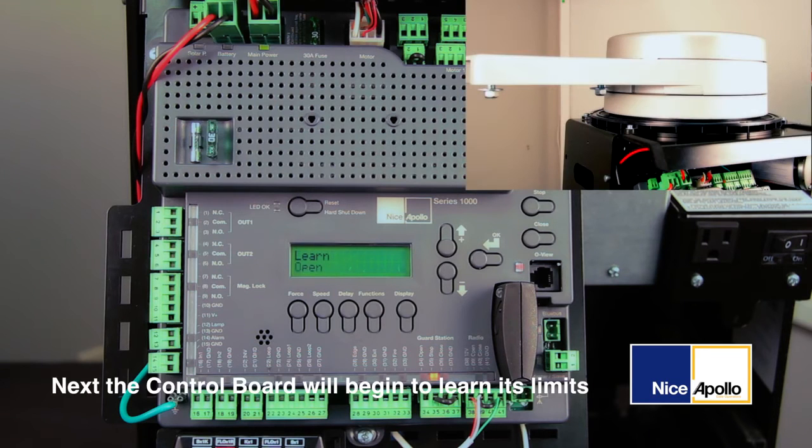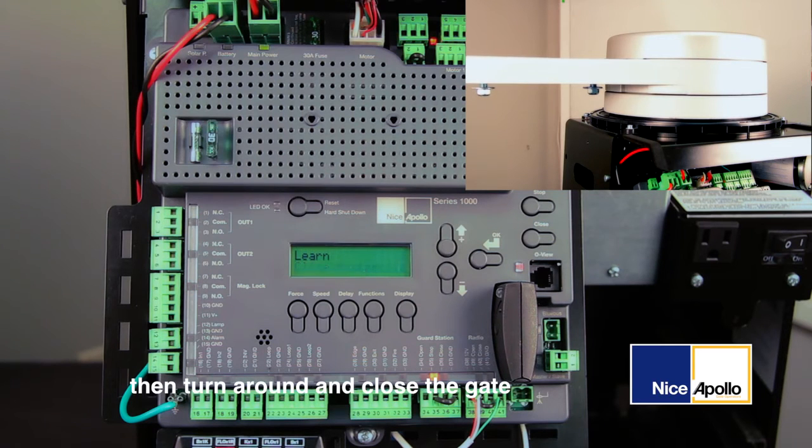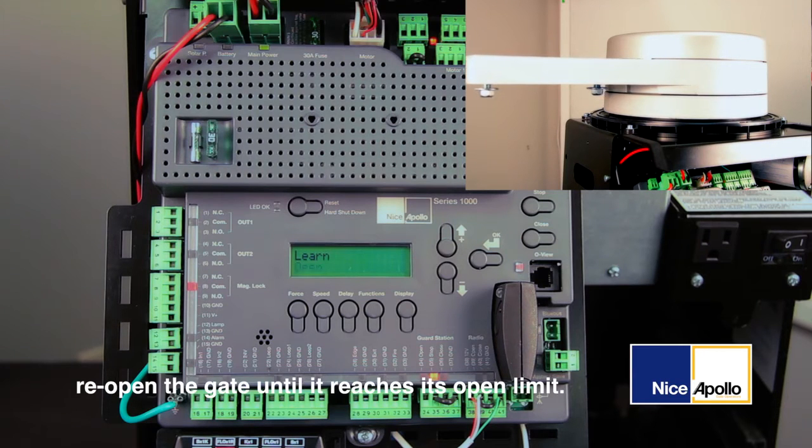Next, the control board will begin to learn its limits, first by slightly opening up the gate, then turn around and close the gate all the way to its closed limit. Once it reaches its closed limit, it will then reopen the gate until it reaches its open limit.